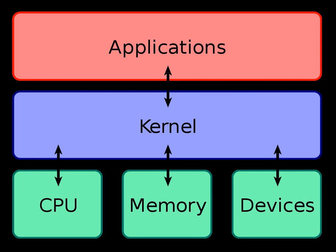While monolithic kernels execute all of their code in the same address space (kernel space), microkernels try to run most of their services in user space, aiming to improve maintainability and modularity of the code base. Most kernels do not fit exactly into one of these categories but are found in between — these are called hybrid kernels. More exotic designs such as nanokernels and exokernels are available but are seldom used for production systems. The Xen hypervisor, for example, is an exokernel.